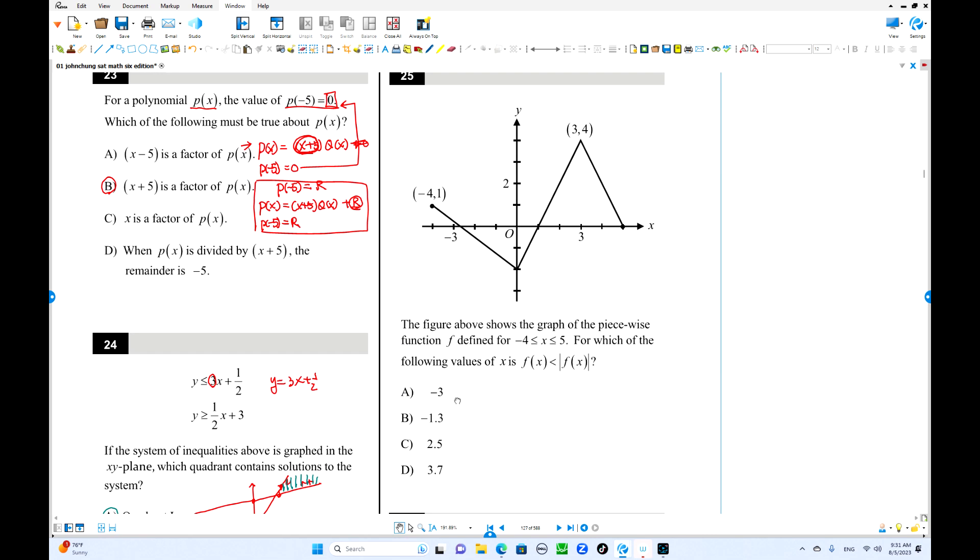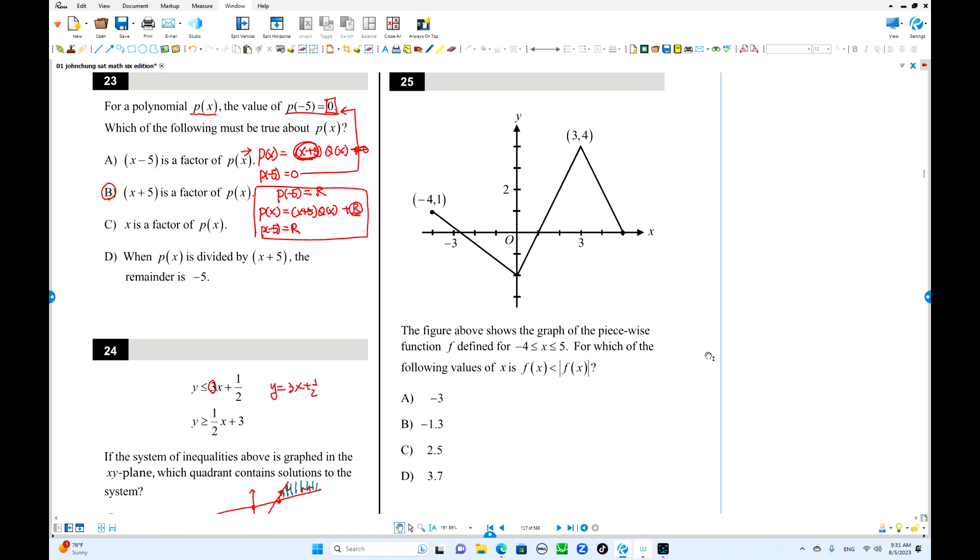Next is number 25. For this domain, negative 4 to 5. So we are going to find some value of x where f(x) is less than absolute value of f(x). The graph of f(x) is given there.